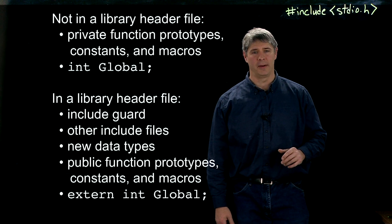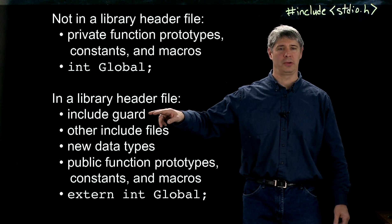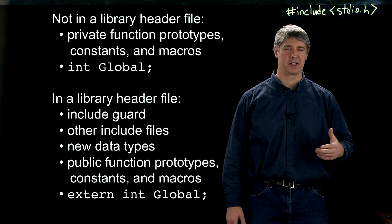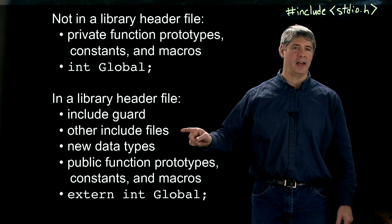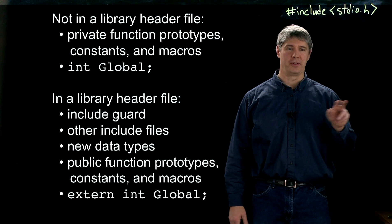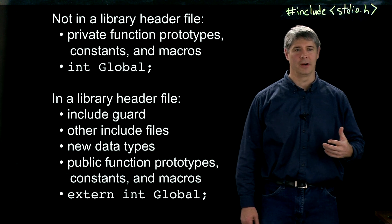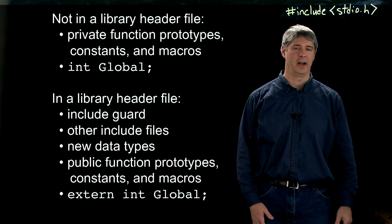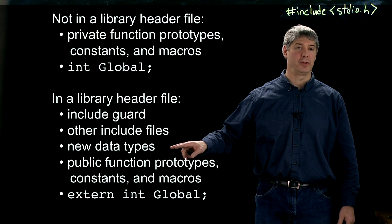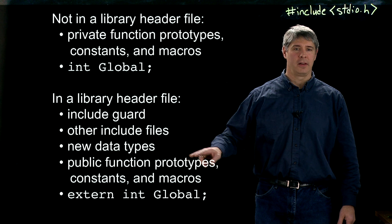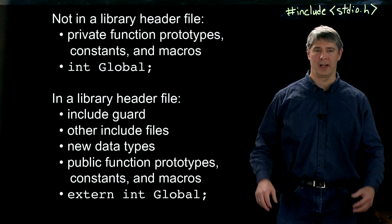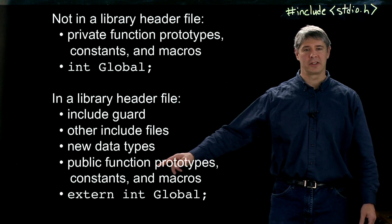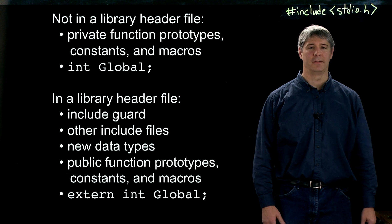Here are things you do want to put in a library header file. You always want an include guard, to prevent accidentally including the same header twice during compilation. You might want other `#include` directives for data types or dependencies your header needs. You might want to define a new data type. You should give public function prototypes so other C files can use your library's functions. You can also include constants and macros you want to make publicly available.